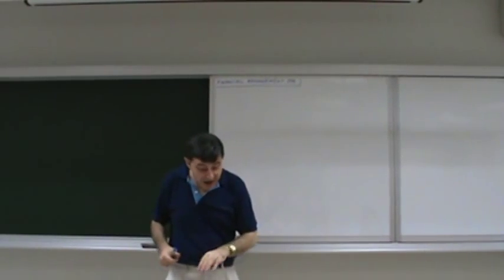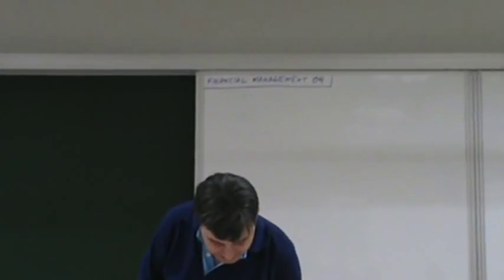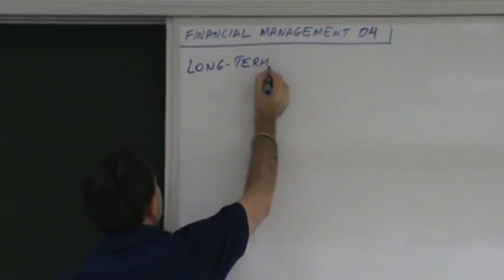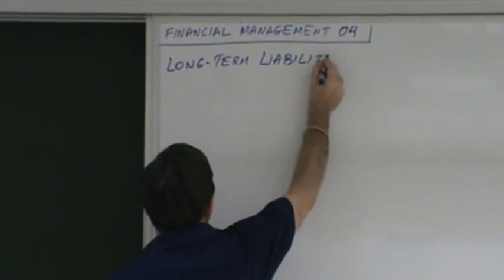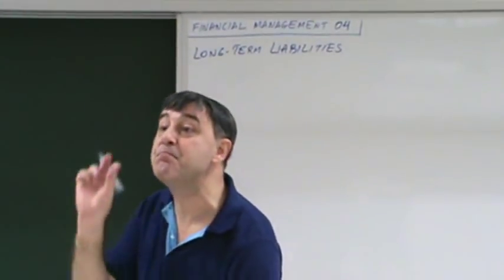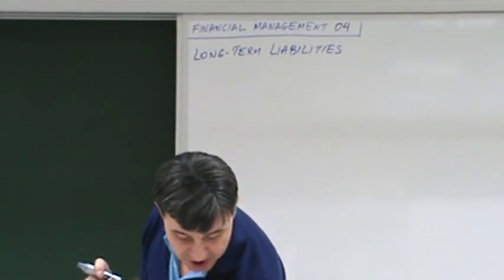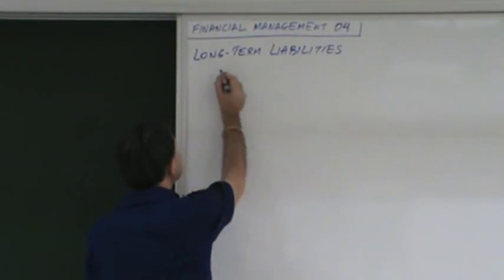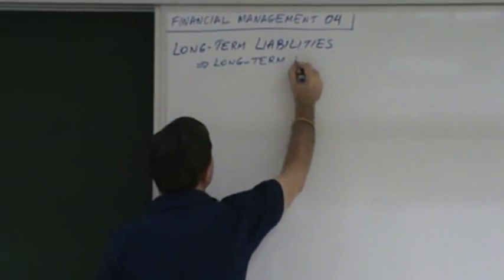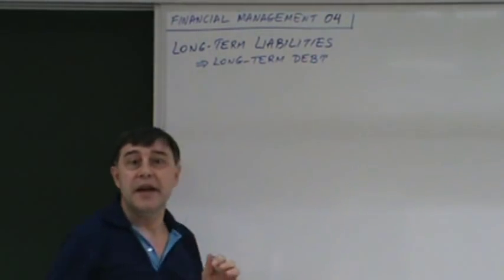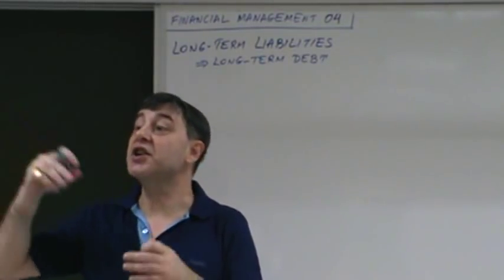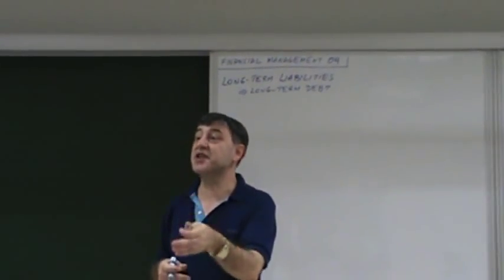Financial Management 4. We just finished current liabilities, and now we have long-term liabilities at the bottom of page 32. There are two groups: long-term debts, and long-term debt is debt whose principal is payable in more than one year. It also includes bonds — long-term bonds.